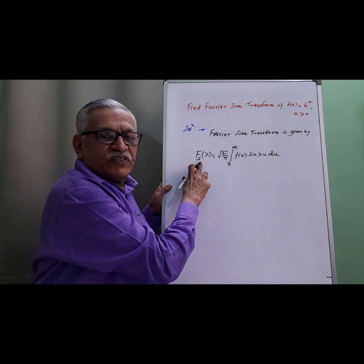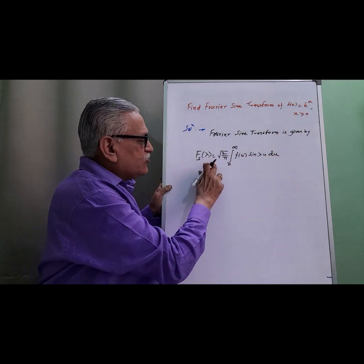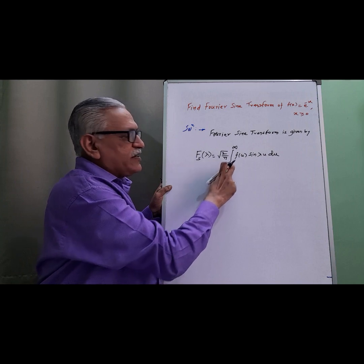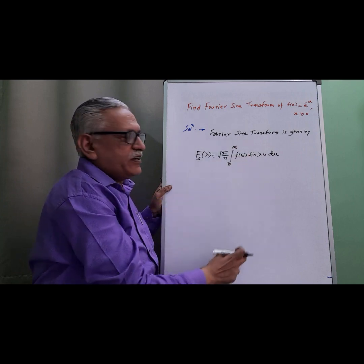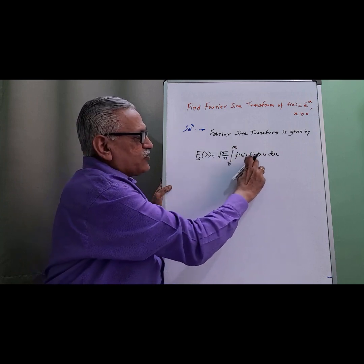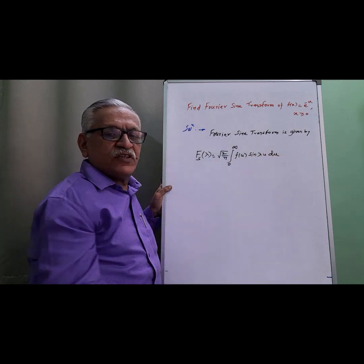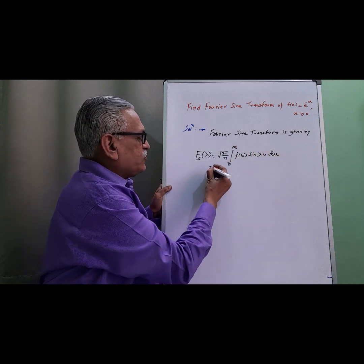The Fourier sine transform is given by √(2/π) times the integral from 0 to infinity of f(u) sin(λu) du.